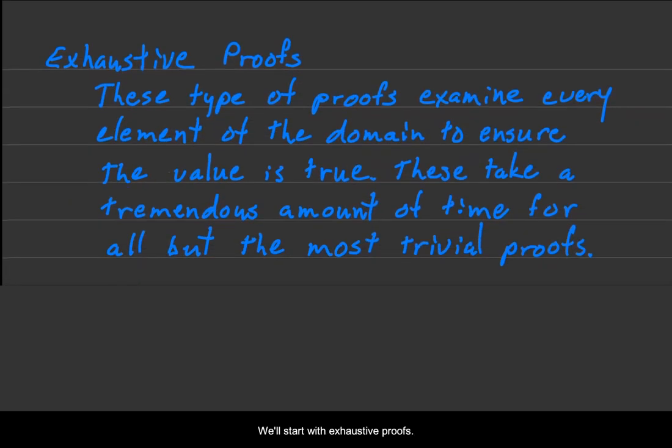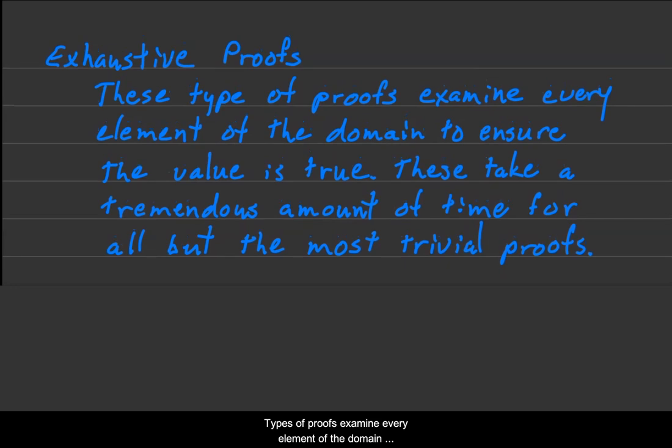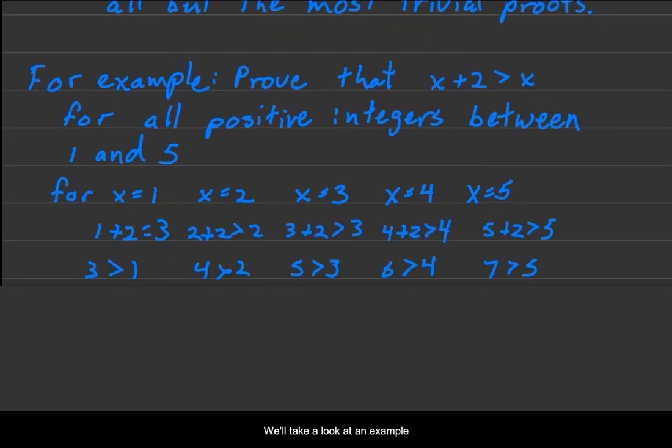We'll start with exhaustive proofs. These types of proofs examine every element of the domain to ensure the value is true. These take a tremendous amount of time for all but the most trivial proofs. We'll take a look at an example.